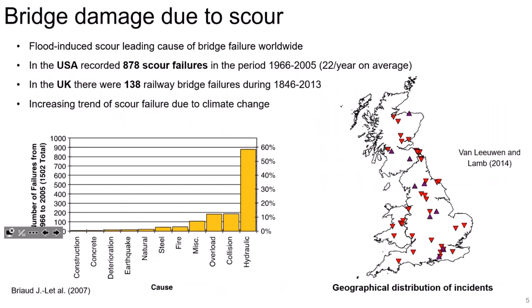Scour is the leading cause of bridge failure worldwide. In the US, they record almost 20 or more bridge failures every year. In the UK, more than one bridge failure per year. Similarly in Italy, in the last year there have been two bridge failures — one in Calabria was a newly built bridge. The trend of scour failure is expected to increase due to climate change, bringing more intense and frequent floods, but also due to the reduction of resources available to transport agencies to mitigate the impact of this hazard.